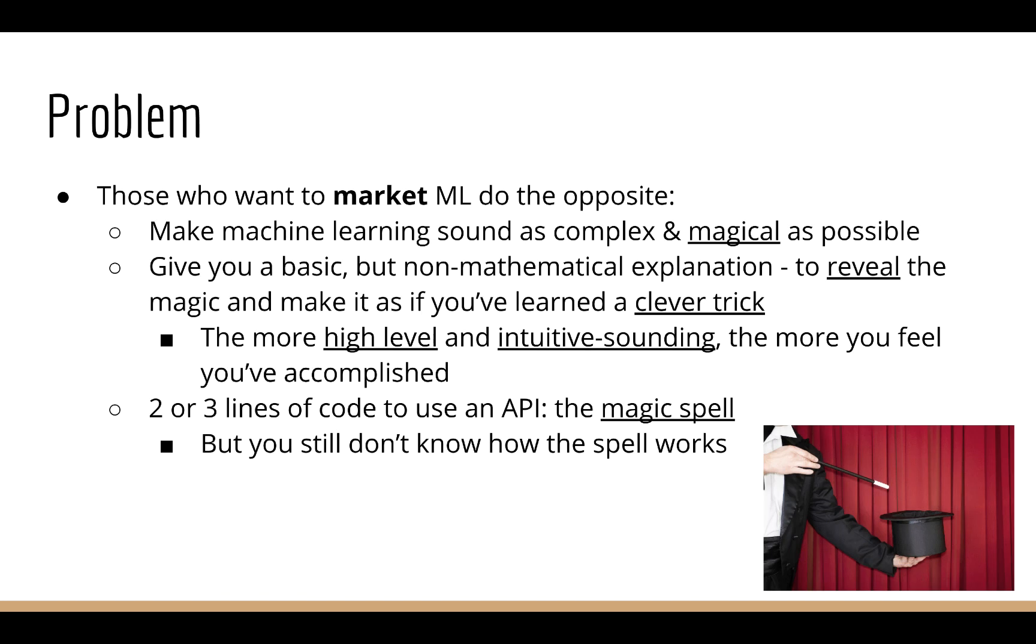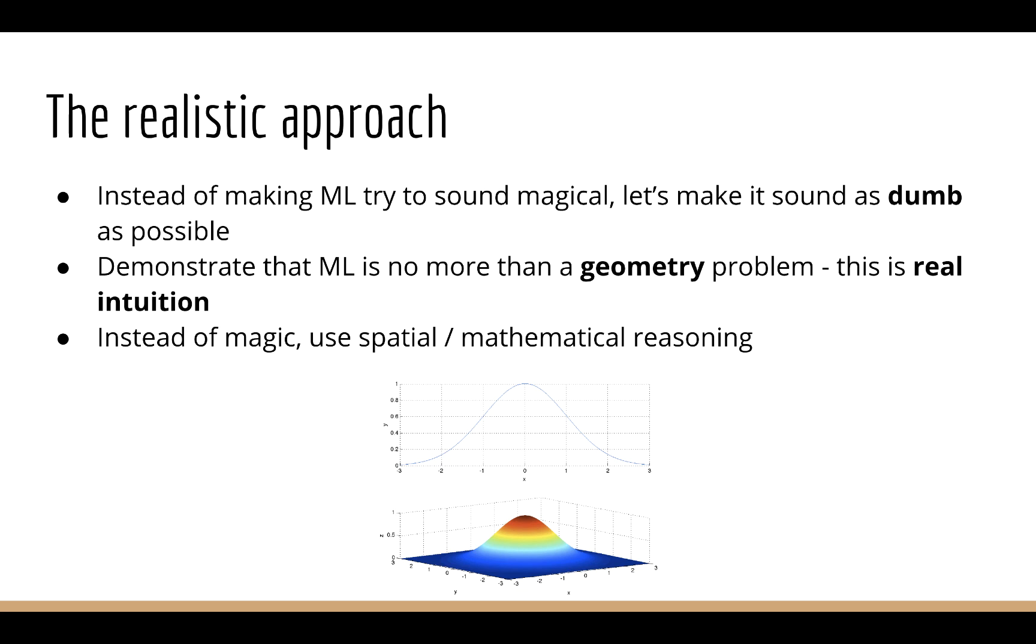Here's the real problem. Most people trying to market machine learning to you are trying to do the opposite of what I'm trying to do. Most people want to make machine learning sound as complex as possible. They want to make it sound really magical. Then they want to give you their high-level, intuitive explanation. Then they want to give you two or three lines of code to accomplish something. But the problem is that they leave you still thinking that you've done something magical. So it's like they have this two or three line magic spell, and that's basically all they know. They can't modify that magic spell for new scenarios, they don't even know how the magic spell works.